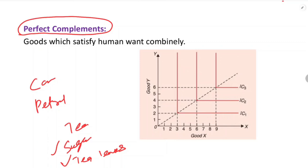In the case of perfect complements, the indifference curve is L-shaped. For example, suppose 3 kg of sugar combined with 2 kg of chapati gives a certain level of satisfaction.